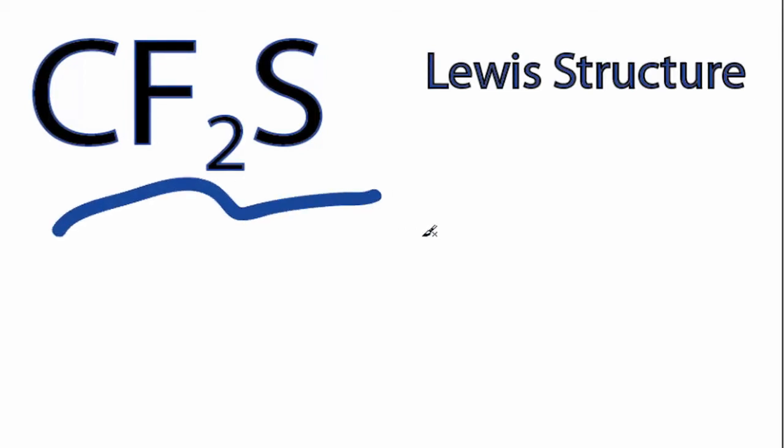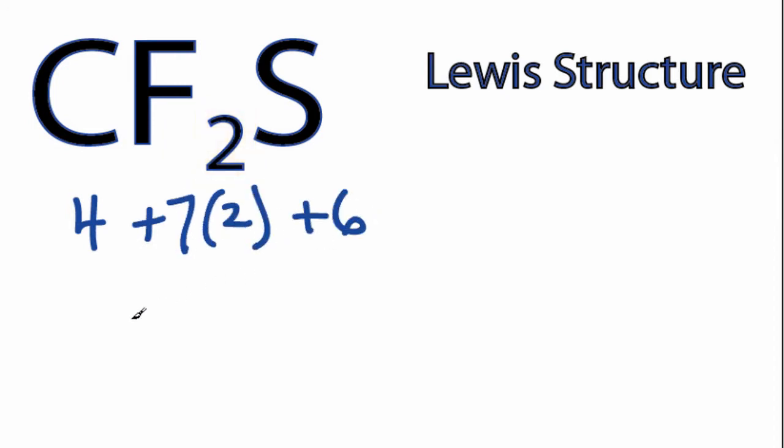For the CF2S Lewis structure, carbon has 4 valence electrons, fluorine has 7, we have 2 fluorines, and sulfur has 6, for a total of 24 valence electrons.